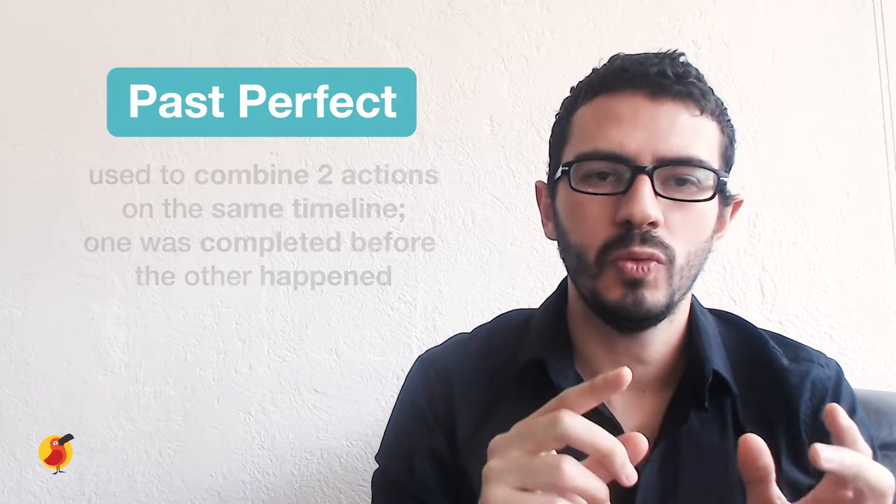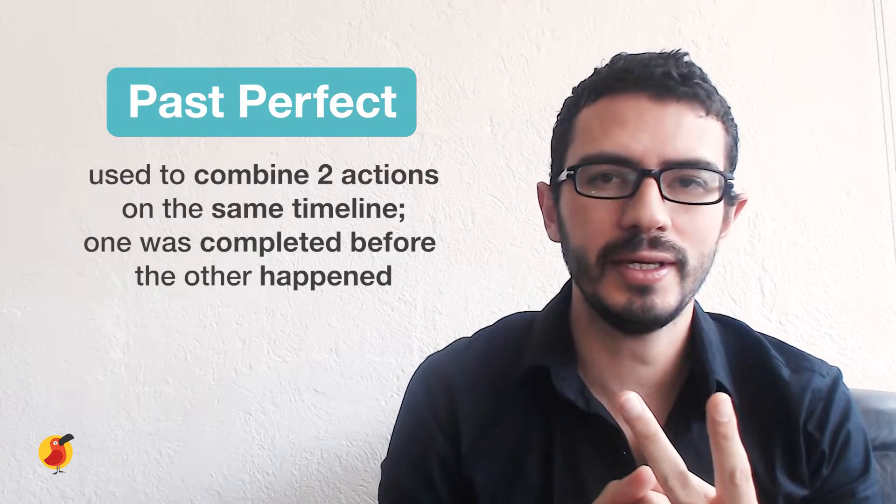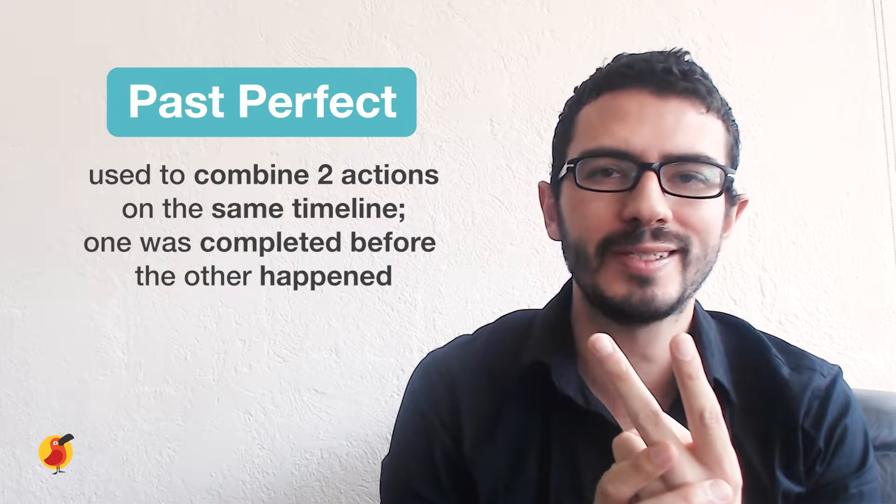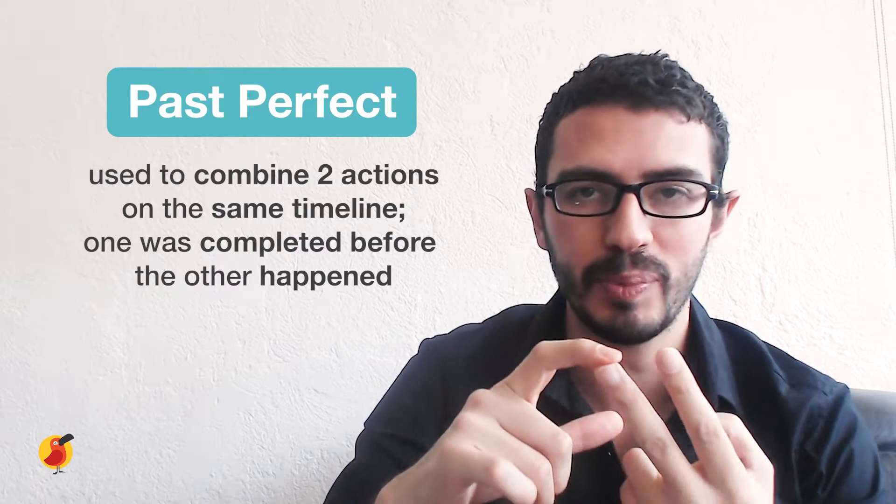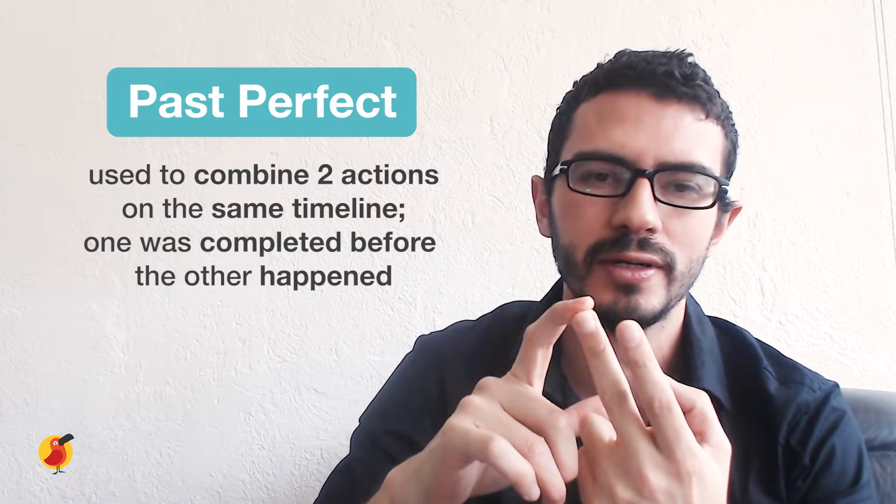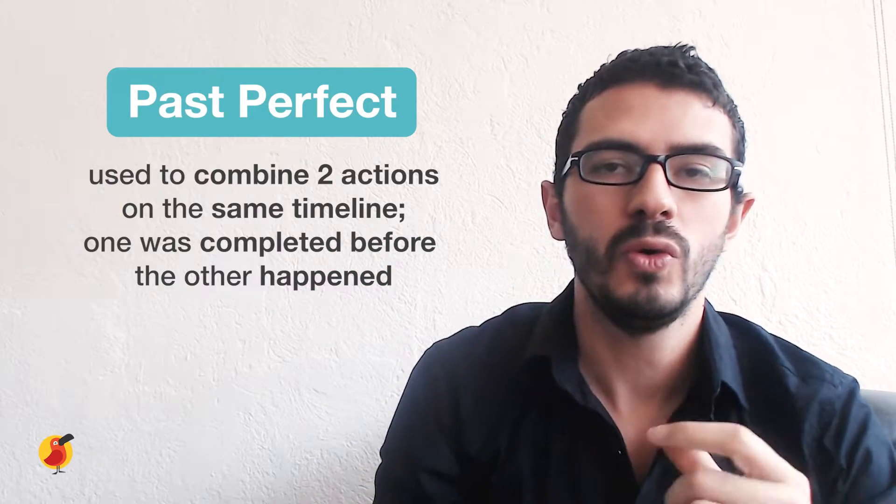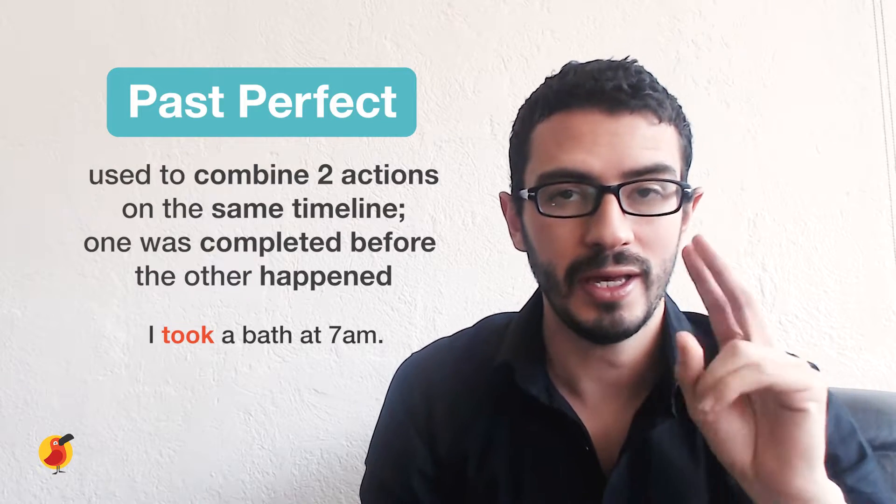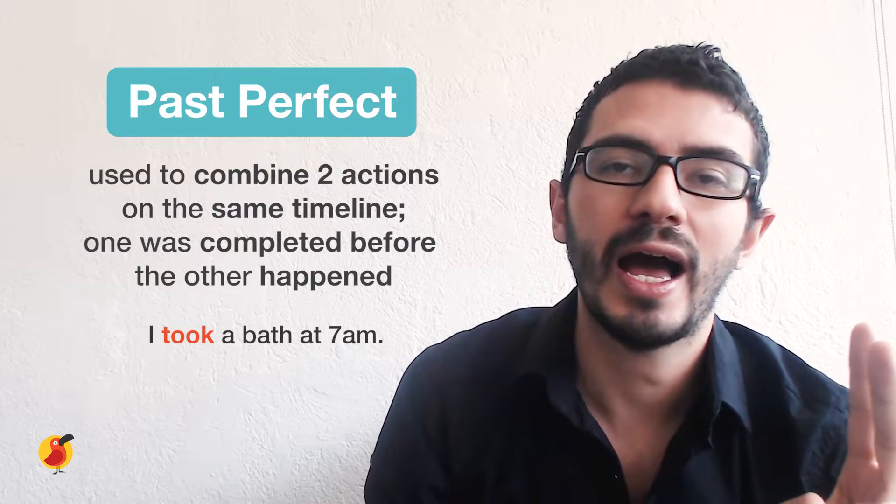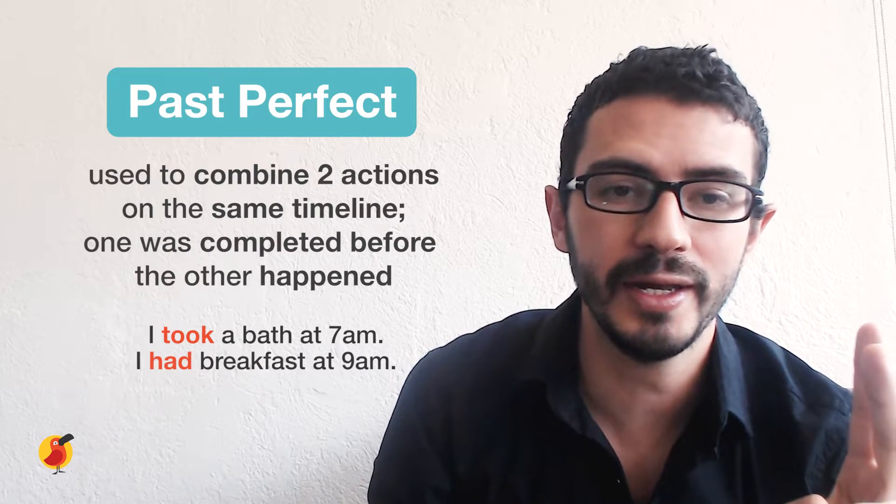So what is the past perfect useful? Well, when you combine two ideas in the same timeline and explain one has been accomplished before the other one happens, that's like an easier way to see it. So let's put as an example, we have the first thing that happened. I took a bath at 7am. And the second thing that happened is I had breakfast at 9am.